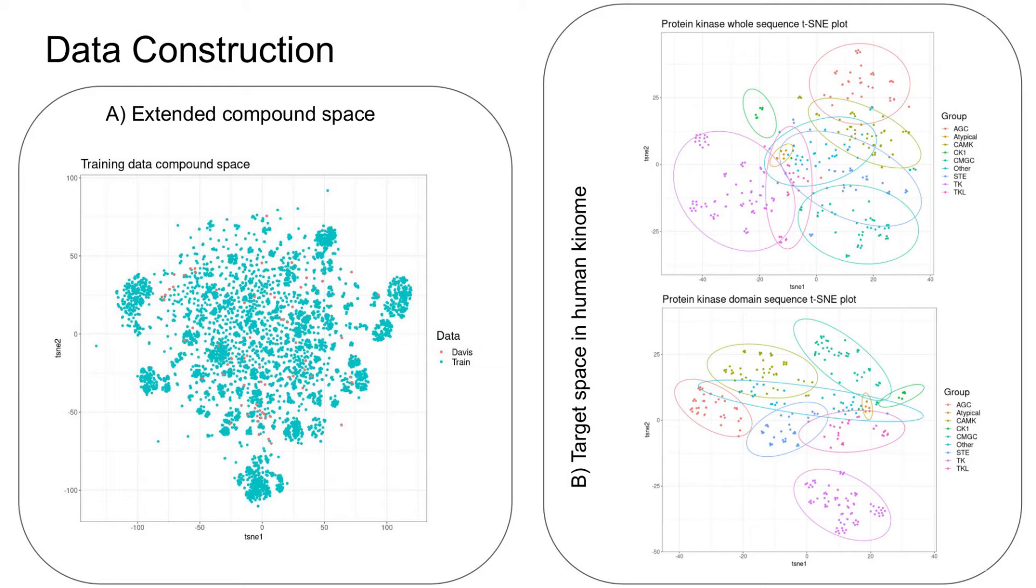By doing so, we enriched the compound space already covered by Davis examples and added a variety of compound scaffolds that are grouped on the periphery with well-defined clusters.